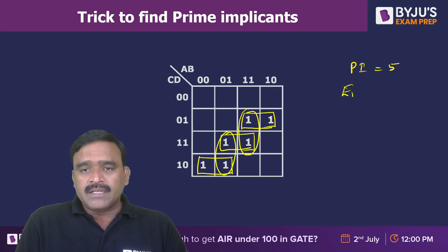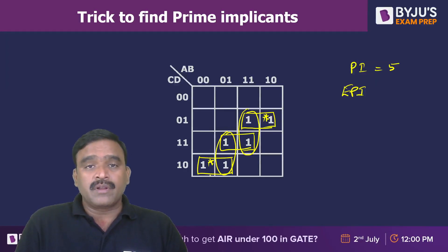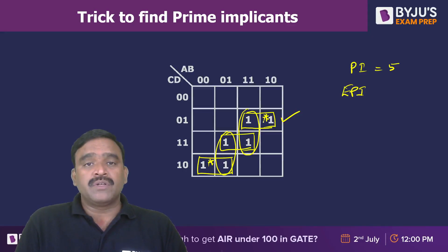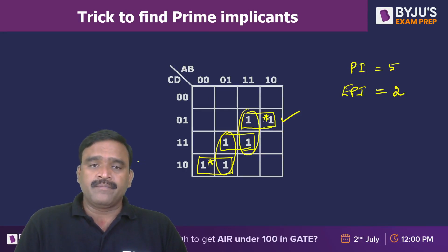For essential prime implicants, we have to find out the number of distinguished ones. A distinguished one means a one present in only one prime implicant, not multiple prime implicants. For example, if a one is present in this prime implicant and also this prime implicant, that is not a distinguished one. A prime implicant that contains at least one distinguished one is an essential prime implicant. So there are two essential prime implicants.